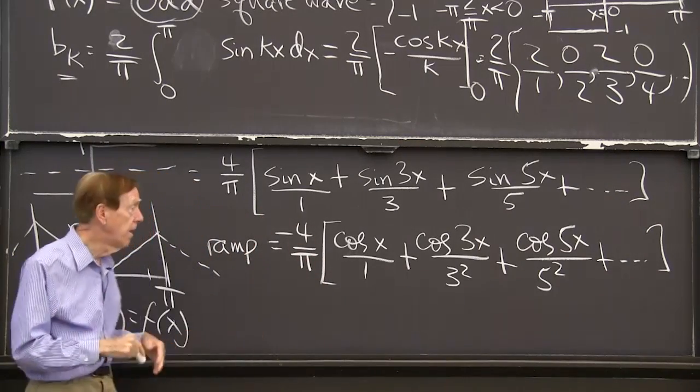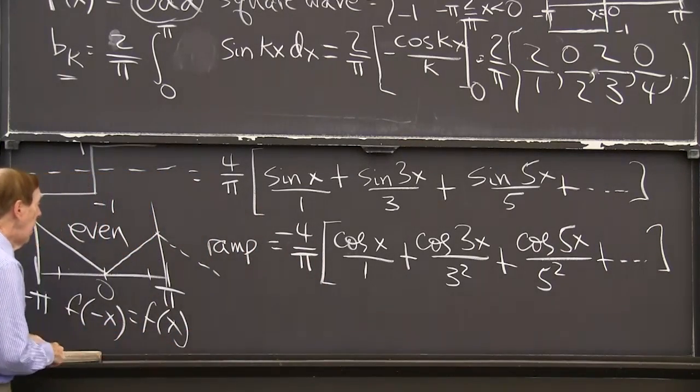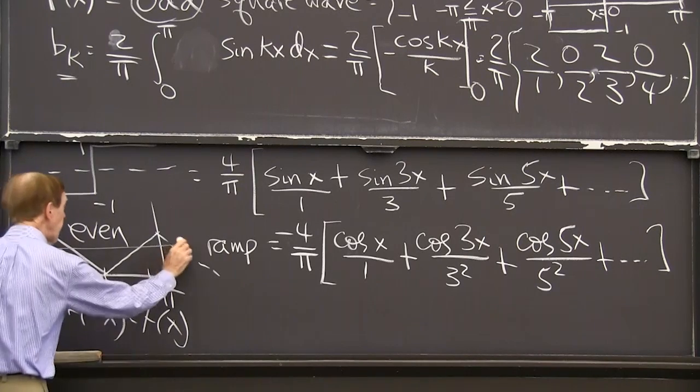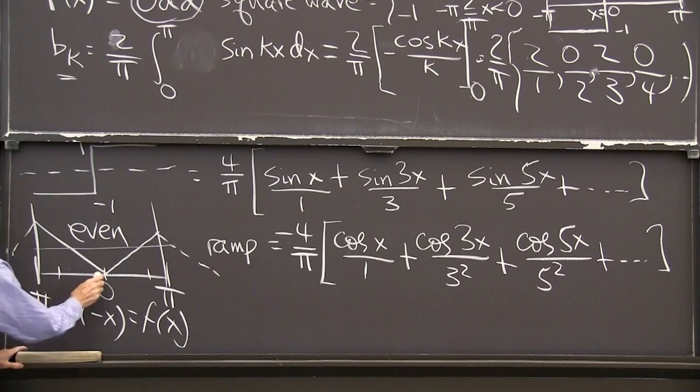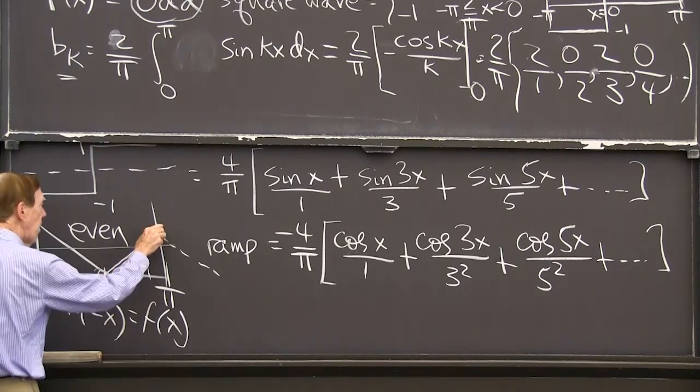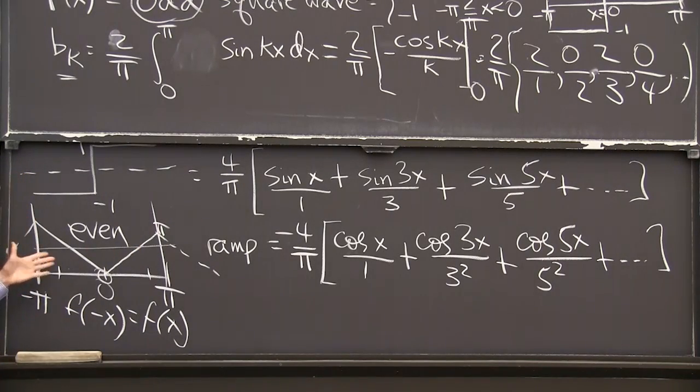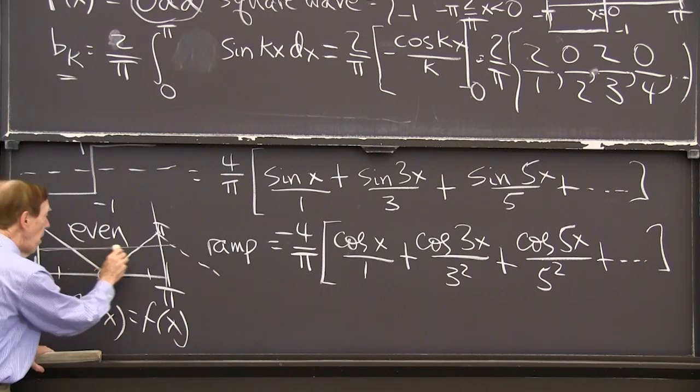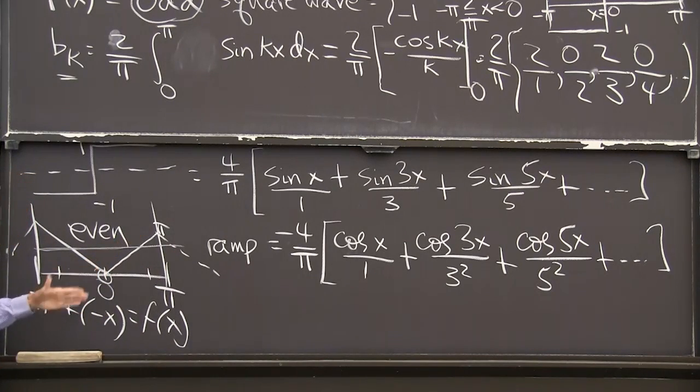And that would be the average of that. I don't know, what's the average of this function? It starts, it goes from 0 up to pi, and it seems like it's pretty, I didn't draw it well, but halfway, I think probably its average is about pi over 2. Right?